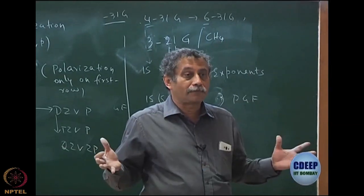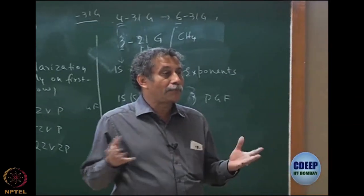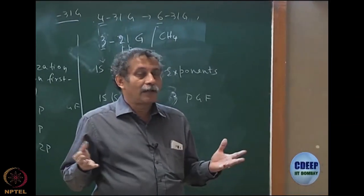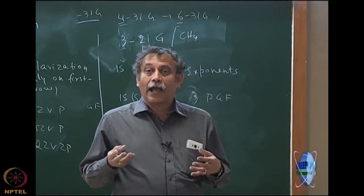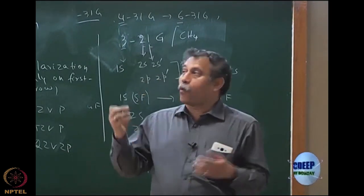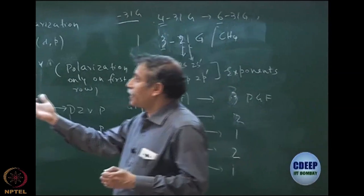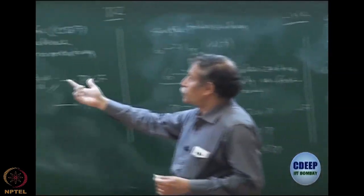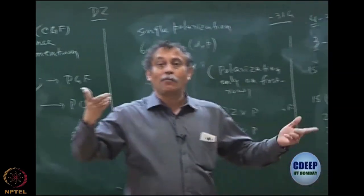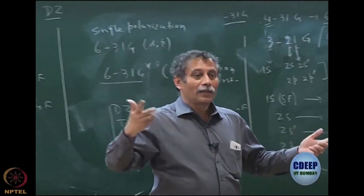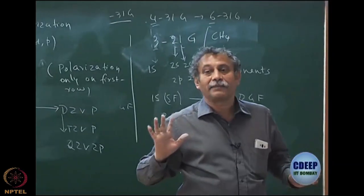Should I augment only the valence? Should I augment polarization? How many polarization functions? Should I go one angular momentum higher, or two? For each one, how many functions? That is why I said basis set — imagination is the limit.